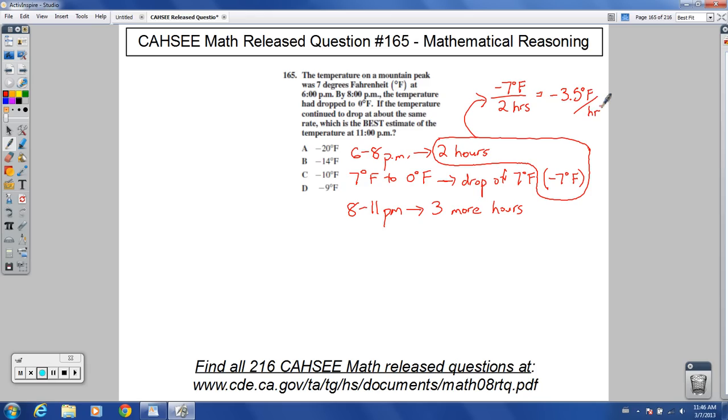It's dropping that much each hour. So going down negative 3.5, we've got 3 more hours. So from here to here, we're going to be starting at 0. That's where we're at at 8 p.m., dropping 3 times negative 3.5.